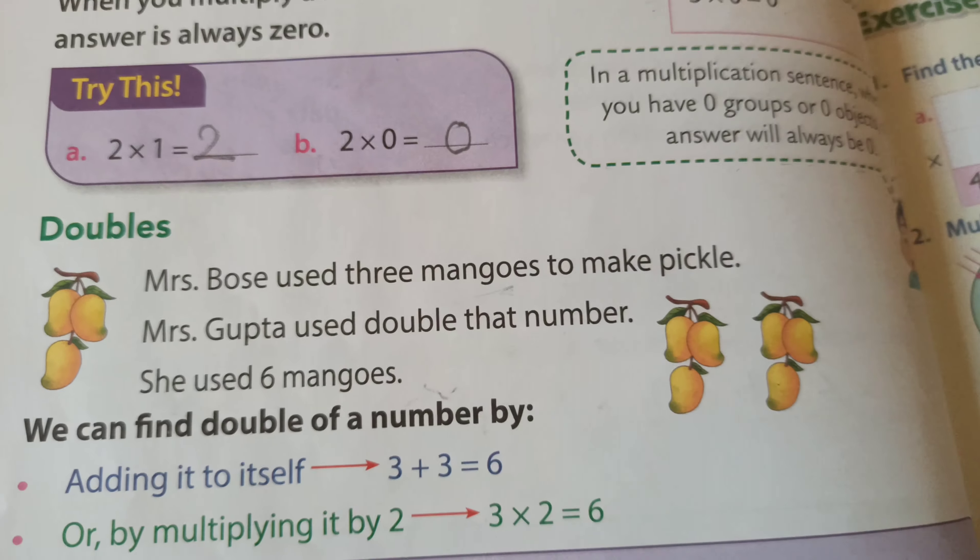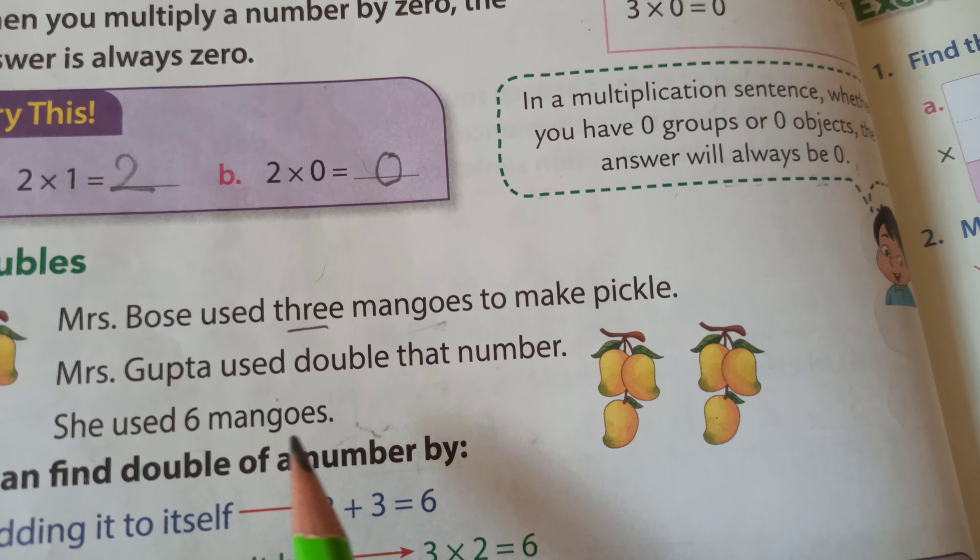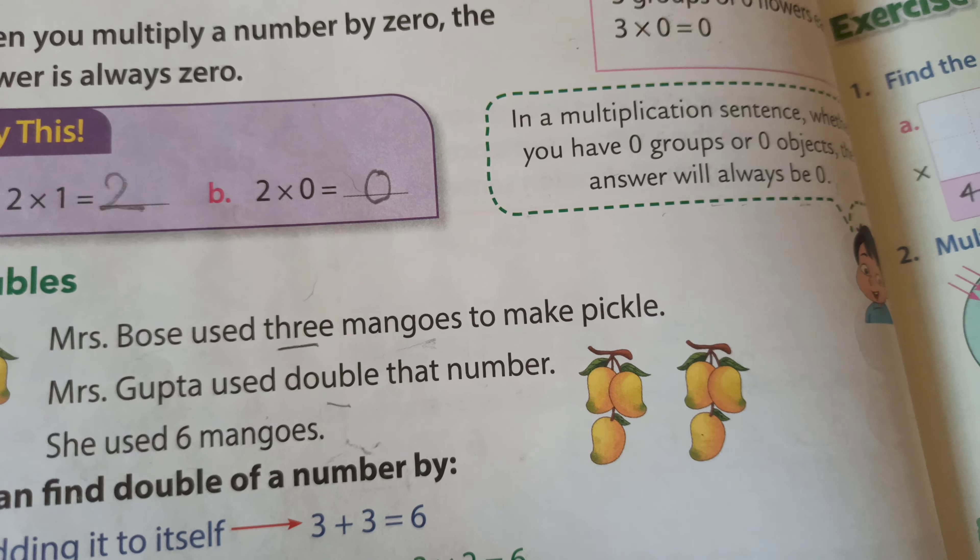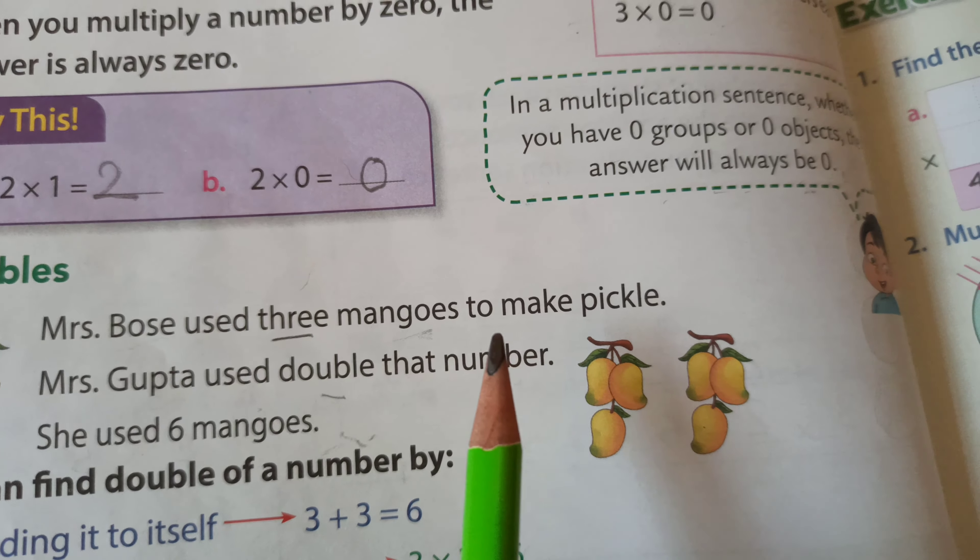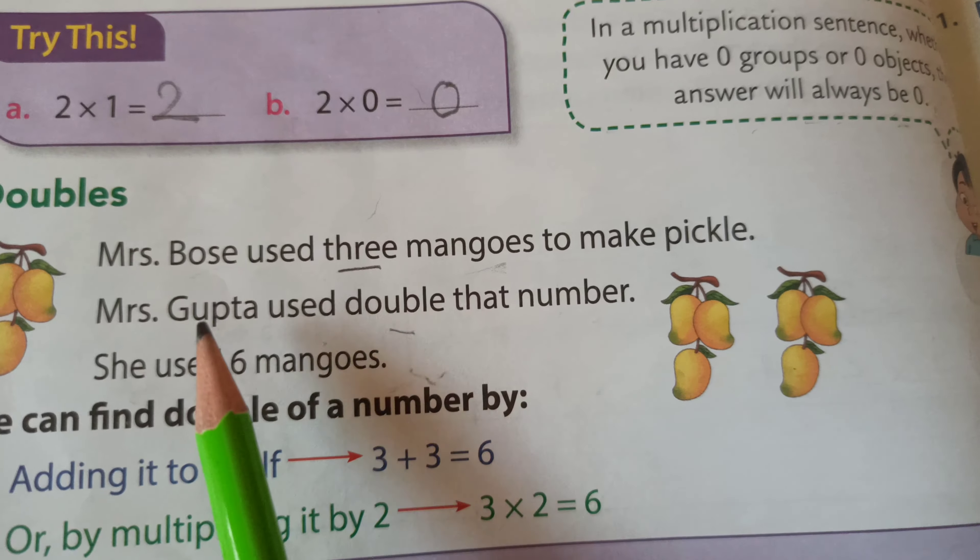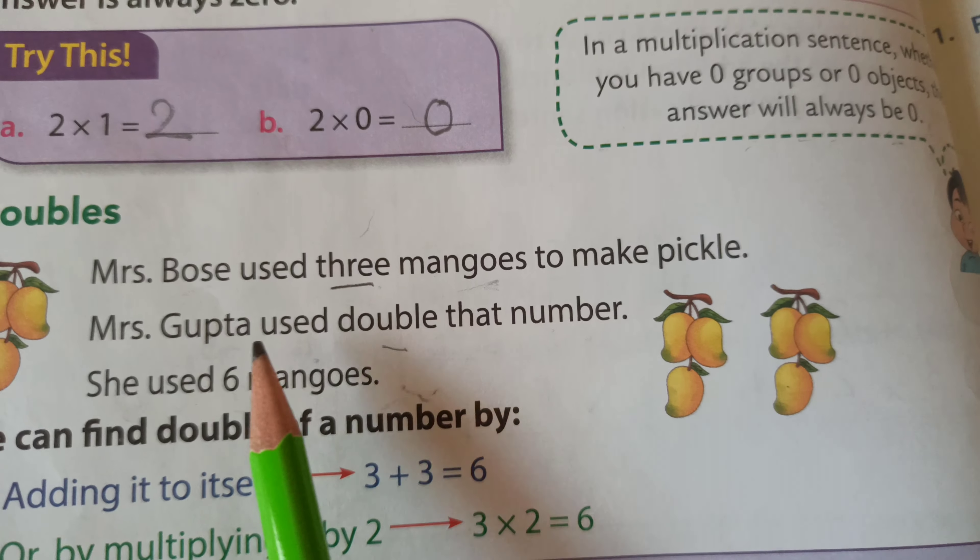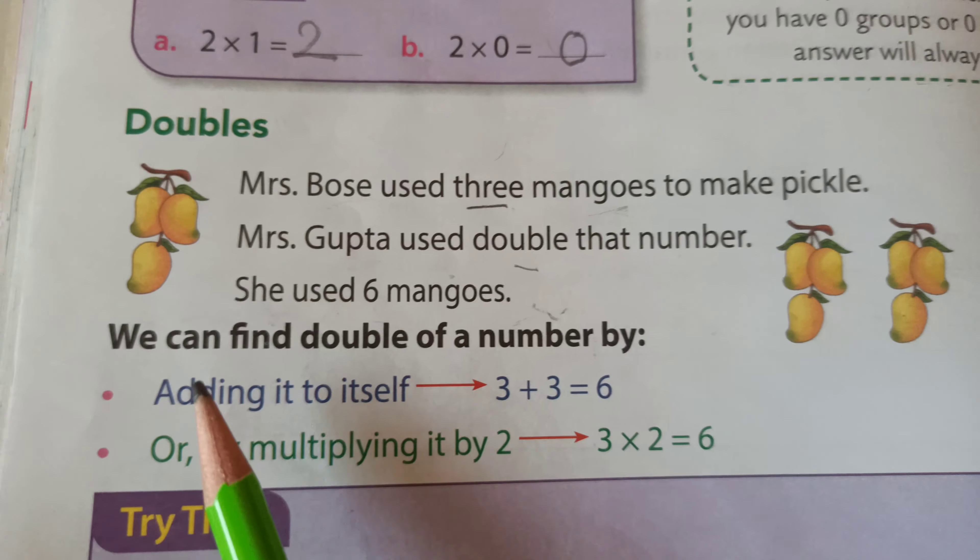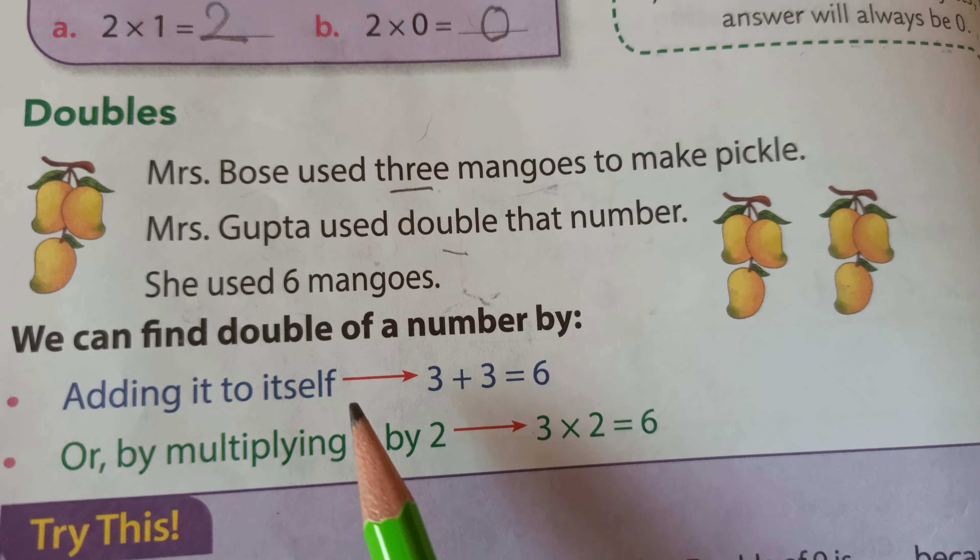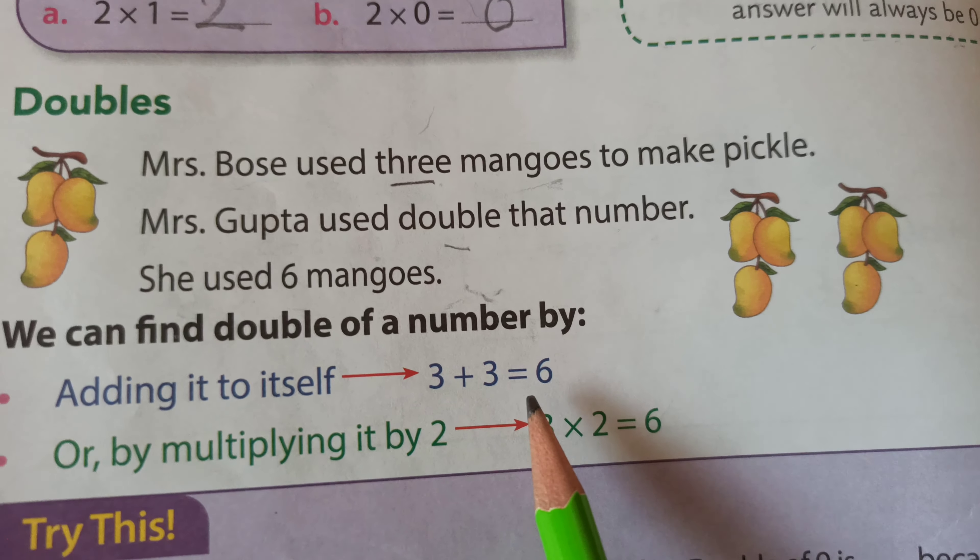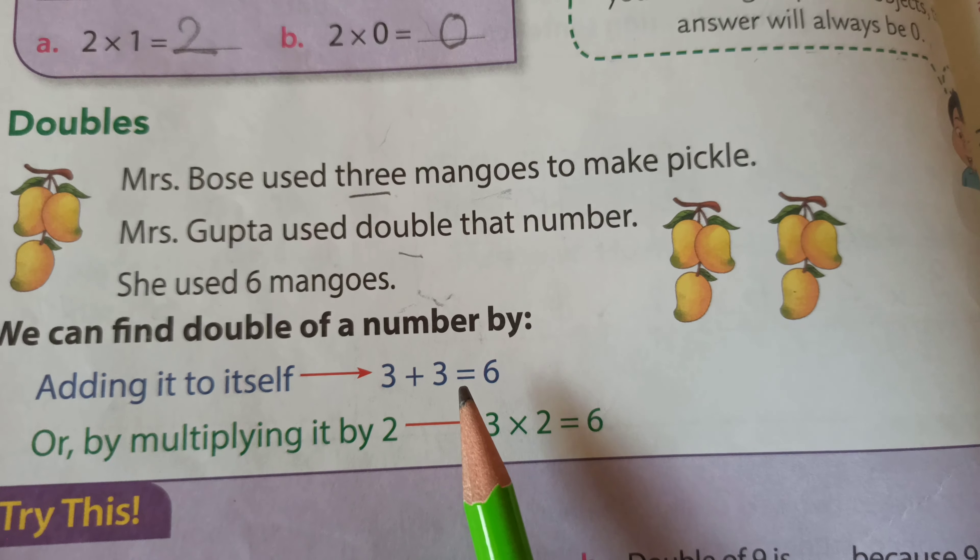Next, doubles. Mrs. Boss used 3 mangoes to make pickle. Mrs. Gupta used double that number - double of 3. Then tell me, 3 number double how many? 6, yes. Mrs. Gupta used double that number, which number? This one, 3. She used 6 mangoes. We can find double of a number by adding it to itself.